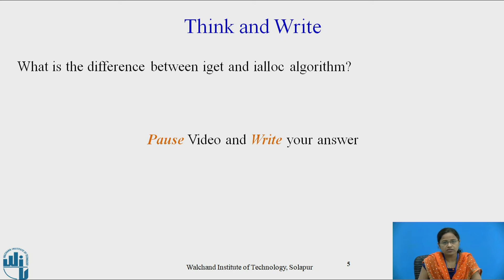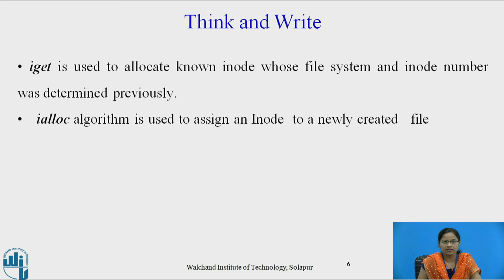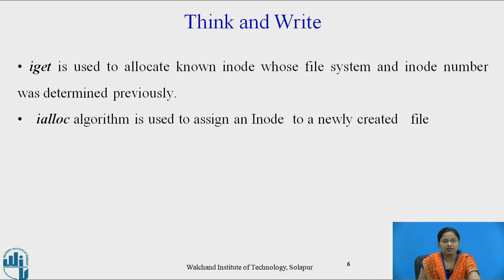Now pause the video and write down your answer for the difference between iGet and iAlloc algorithm. iGet is used to allocate a known iNode whose file system and iNode number was determined previously, while iAlloc is used to assign an iNode to a newly created file.